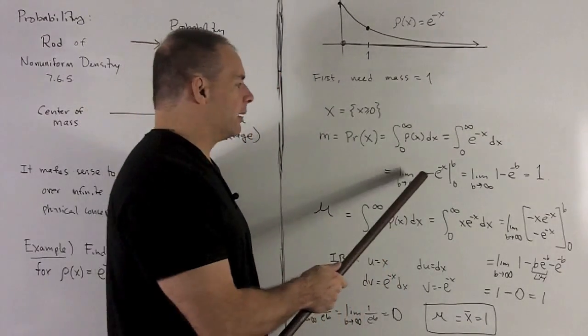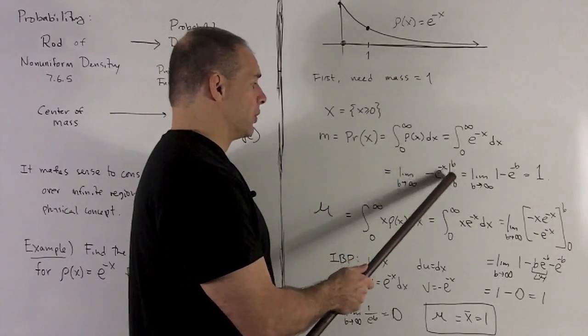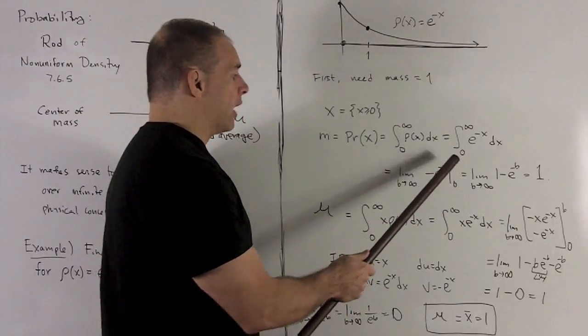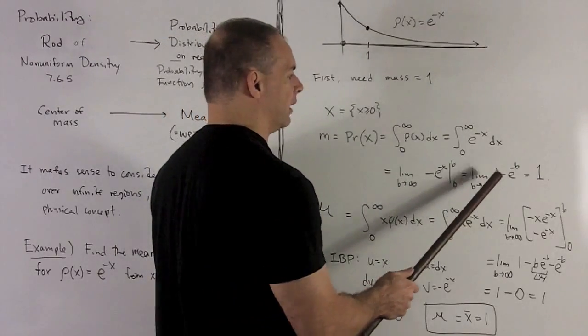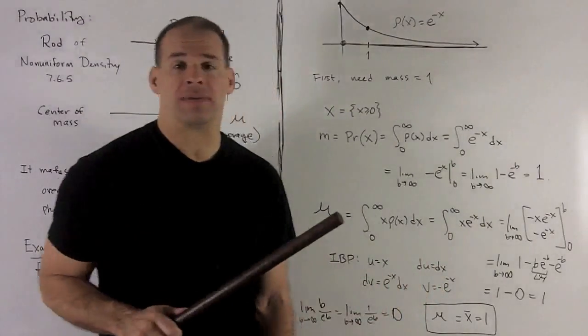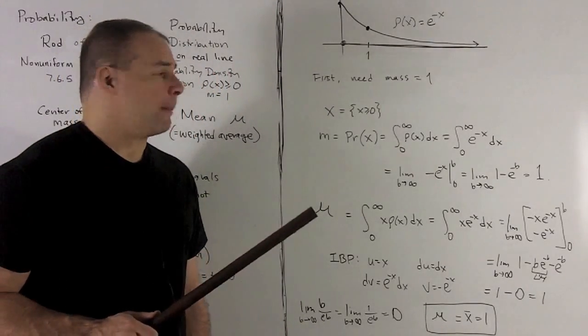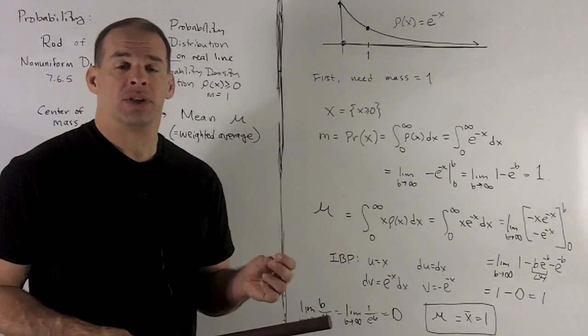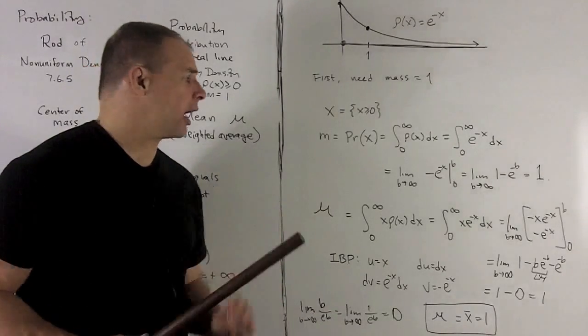Take the antiderivative. I get minus e to the minus x from zero to b. I'm going to evaluate at b and zero. Take the difference. That's going to give me a limit. B goes to infinity of one minus e to the minus b. And e to the minus b is going to go off to zero as we let b go out to infinity. So our mass is going to be equal to one. So we don't need to do any adjustments to bring this to probability theory. It's already there.